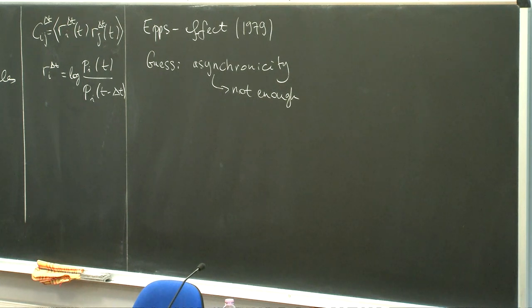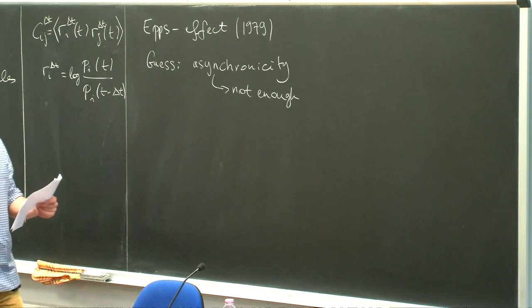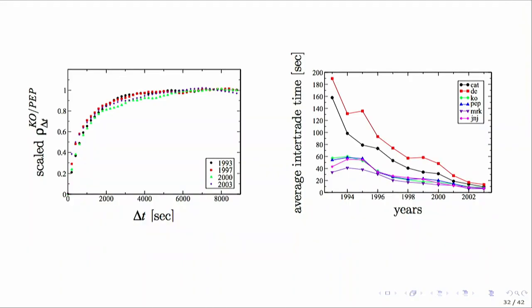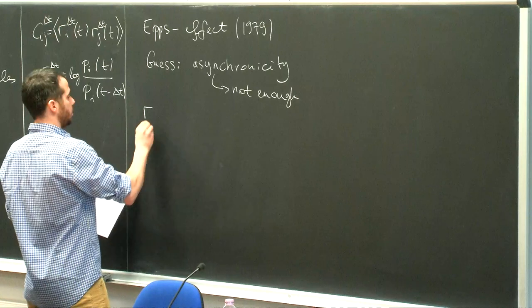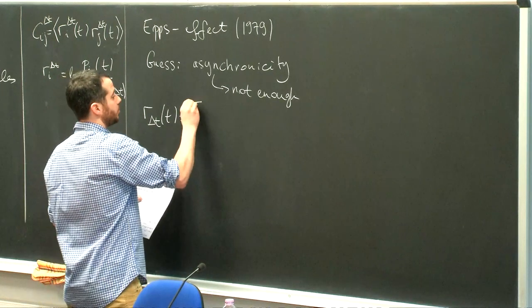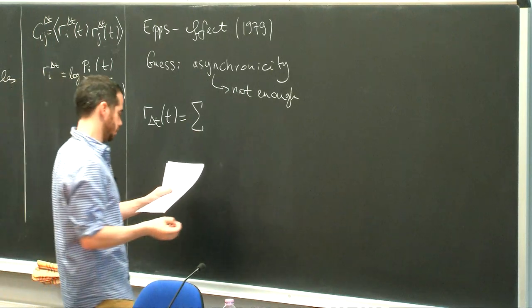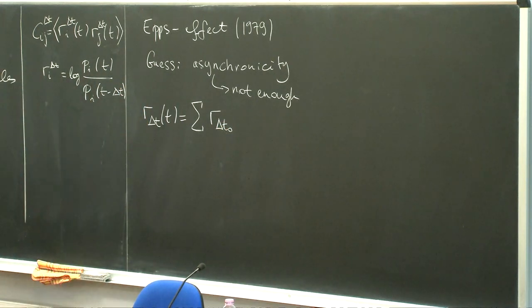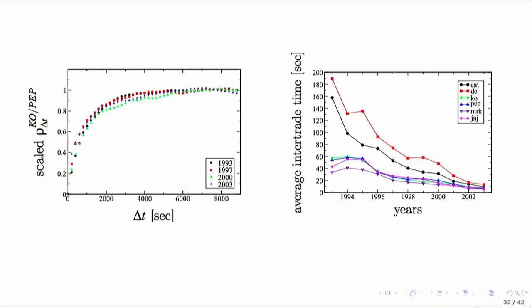We need another explanation. The explanation I will give is extremely simple from the math point of view but it has strong implications. What is trivial is that you can write up the return in a window Δt simply as a sum of the returns in smaller windows. We can define Δt₀ as your shortest timescale - in our case that would be two minutes, the leftmost point - and then you can write the return at scale Δt as a sum of returns at scale Δt₀.